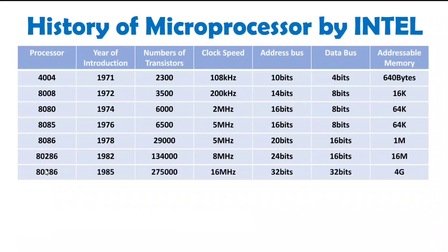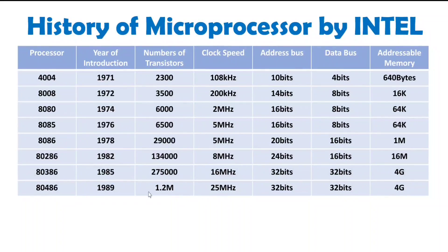After 80286, the 80386 processor was introduced in 1985 with 275,000 transistors and a clock speed of 16 megahertz. Both the address and data buses were 32 bits, allowing 4GB of memory to be interfaced. After 80386, the 80486 came in 1989 and was a huge success — many industries adopted it. There were 1.2 million transistors and a 25 megahertz clock speed. With 32-bit address and data buses, it could also interface 4GB of memory.